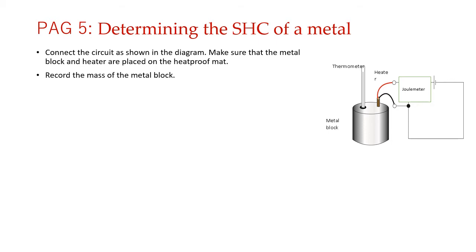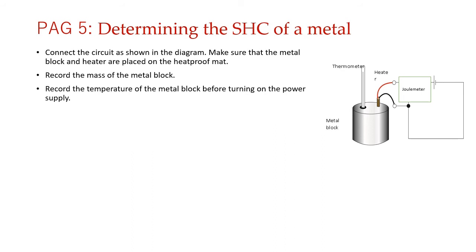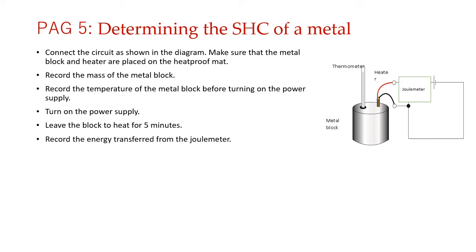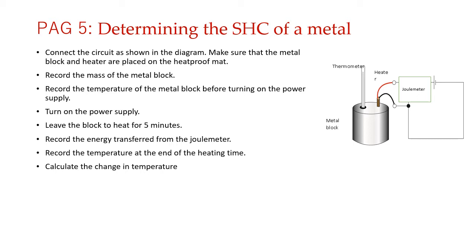Before you start heating, find the initial temperature of the block and make a note of it. Then start heating — we generally heat for five minutes to get a decent increase in temperature. Once heated for five minutes, switch off the heater. Look at the joule meter and record how much energy was transferred. At the same time, read the final temperature. Using your initial and final temperature, calculate the change in temperature. The equation is E = mcΔθ, so to find c you need E, m, and Δθ.